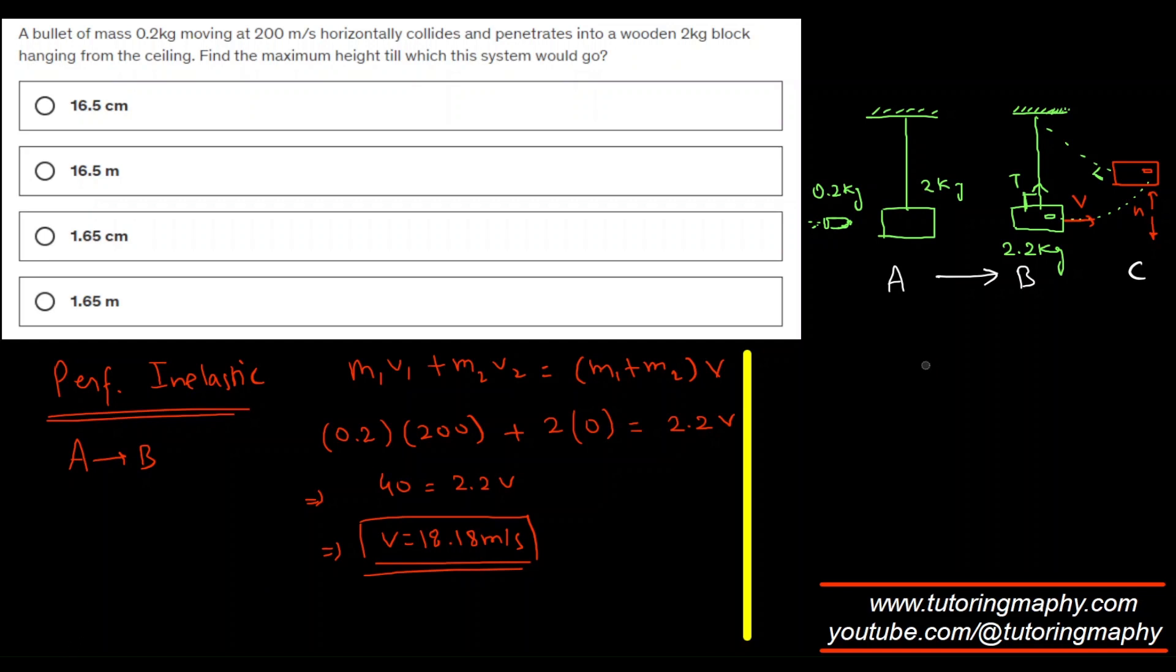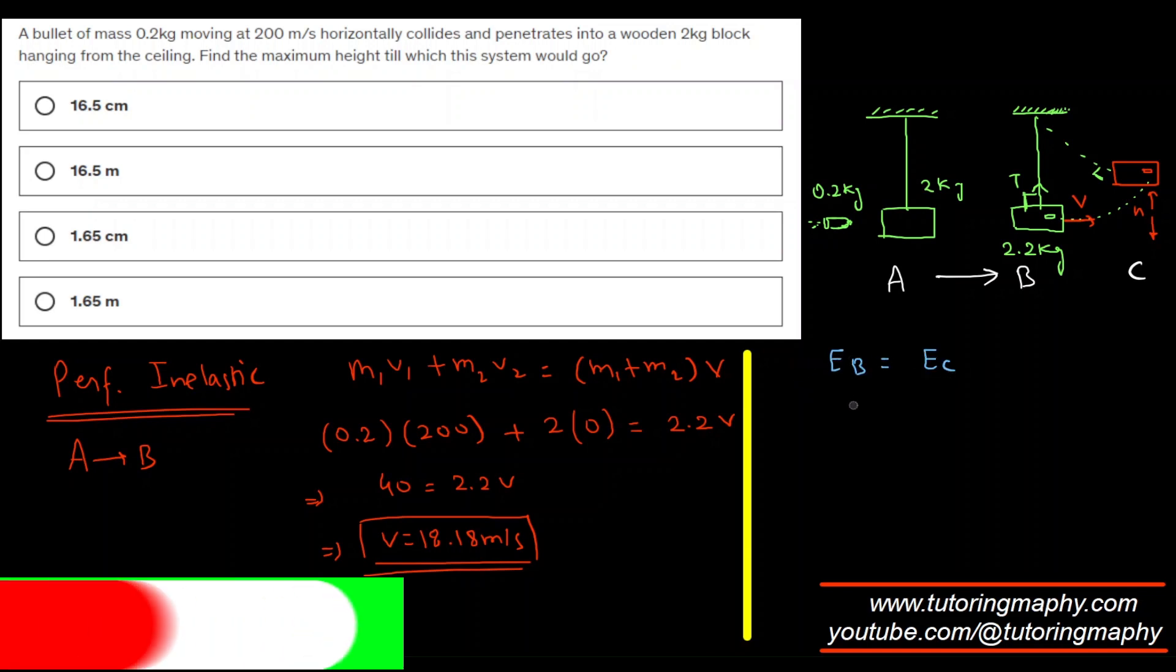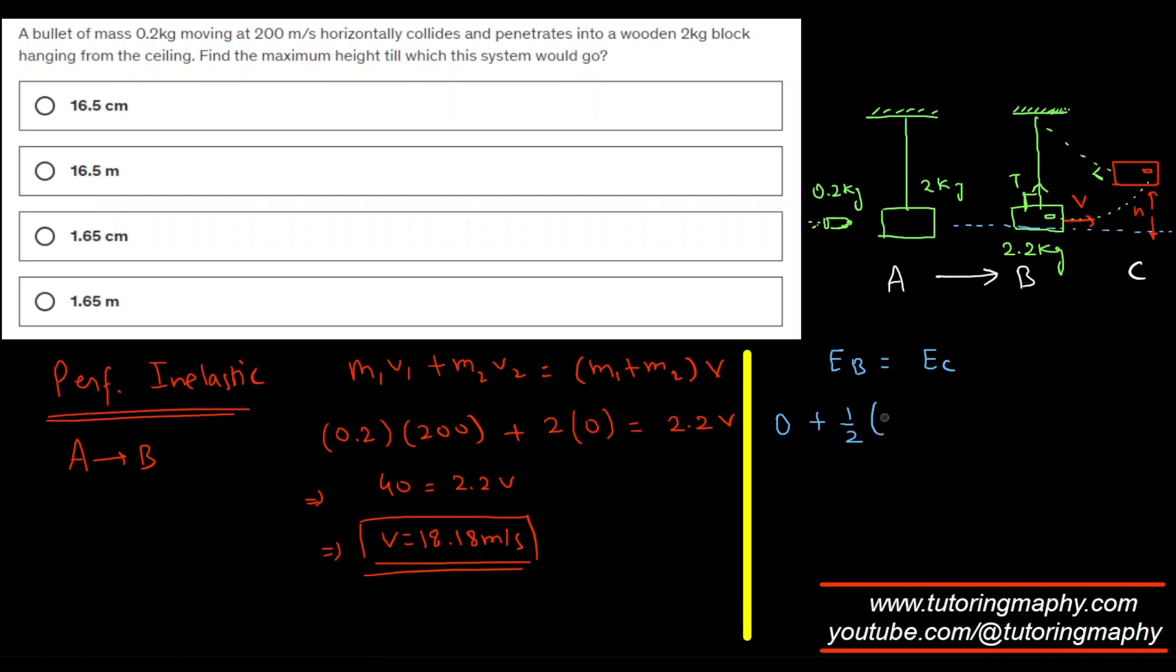I'm going to say that the total energy at B, total mechanical energy at B - I'm going to take the ground level as the reference point - so if the block is at the ground level, obviously there's no potential. There's definitely kinetic, which is half total mass times v squared, which we just found as 18.18. At C it stops, right? Because that's when it will attain the maximum height. So at maximum height, the kinetic energy is zero and the maximum height is mgh. Let's take g as 10, h is just unknown plus zero.